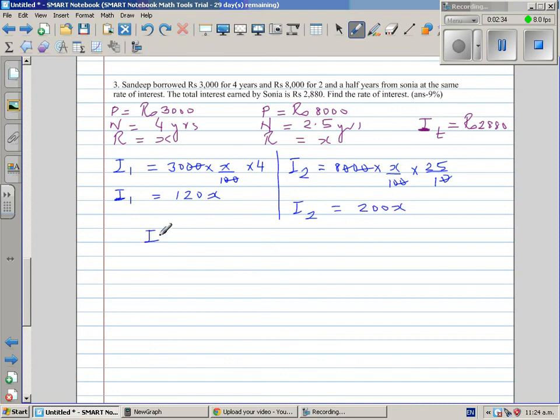So I hope you understand I1 plus I2. Interest in the first situation plus interest in the second situation is equal to the total interest. So this is a simple linear equation. So this is 120x plus 200x is equal to 2,880. So this is 320x is equal to 2,880. So dividing both sides by 320.